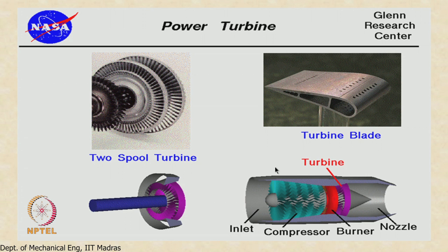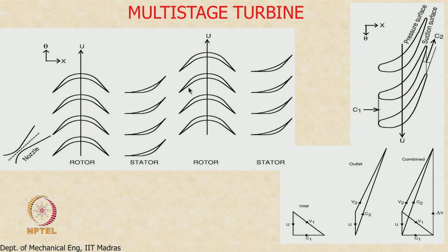We now move on to turbines. We have seen the inlet, compressors, and combustors. In a multistage turbine, we have rotor blades which rotate and stator blades which redirect flow onto the next set of rotor blades. The key difference from a compressor is that pressure decreases as the fluid flows through the turbine, since the fluid undergoes expansion. There is no danger of an adverse pressure gradient or flow separation.